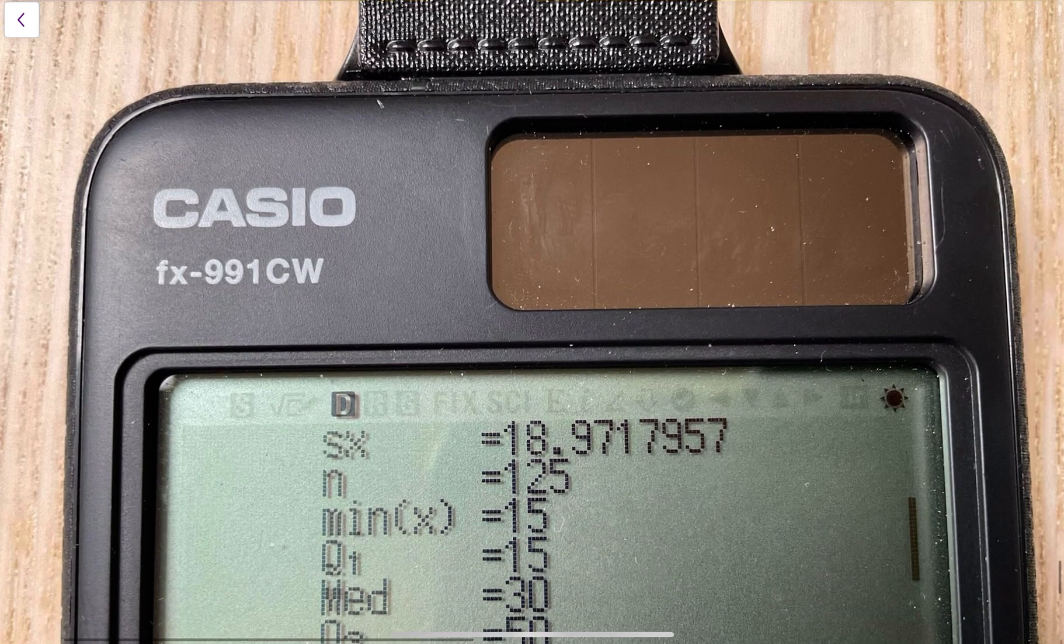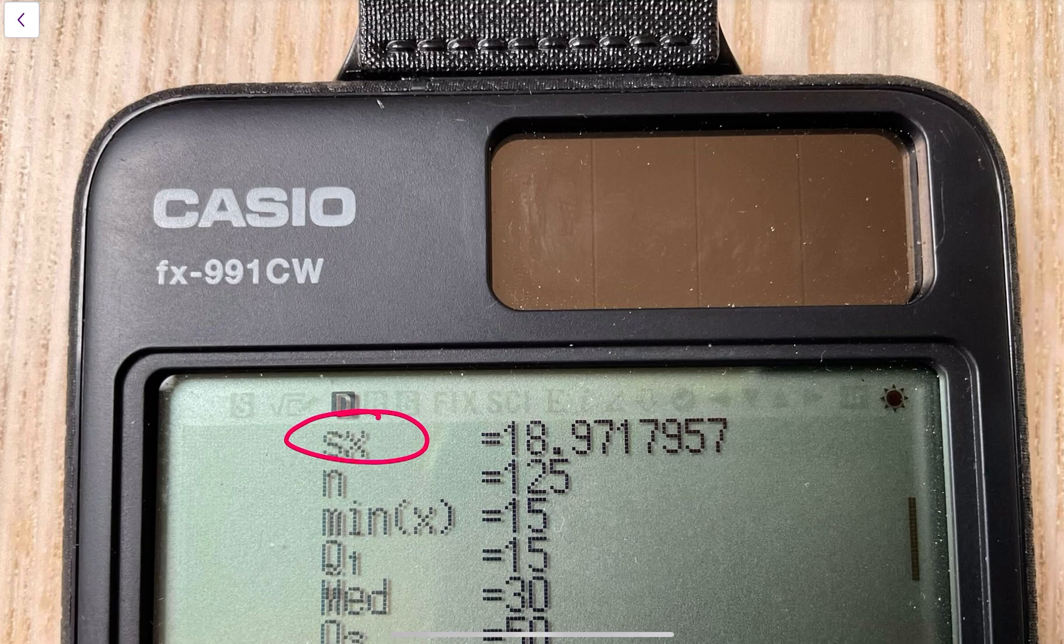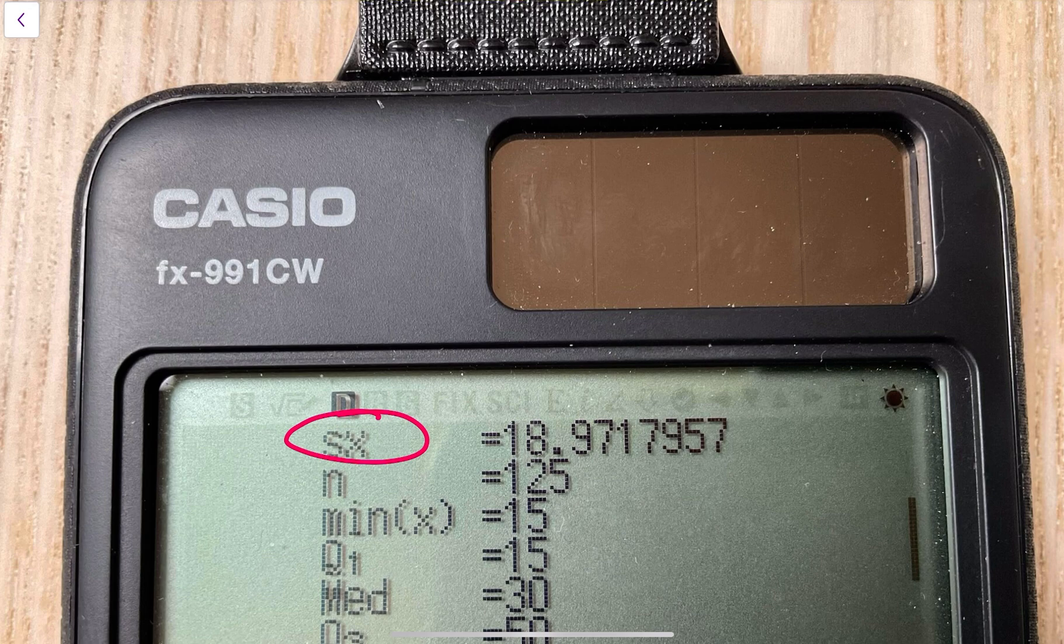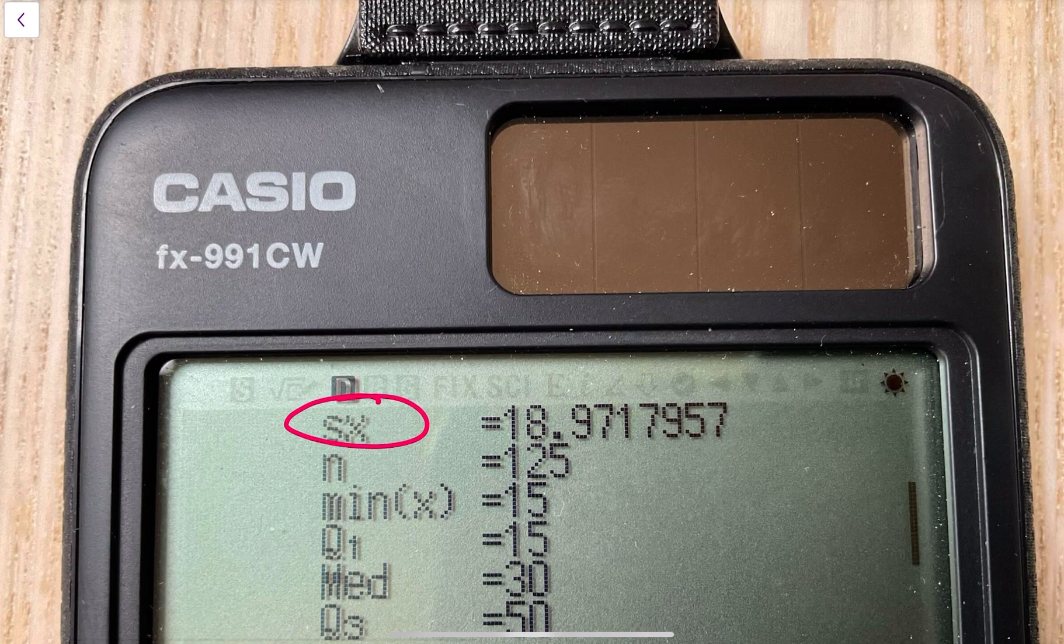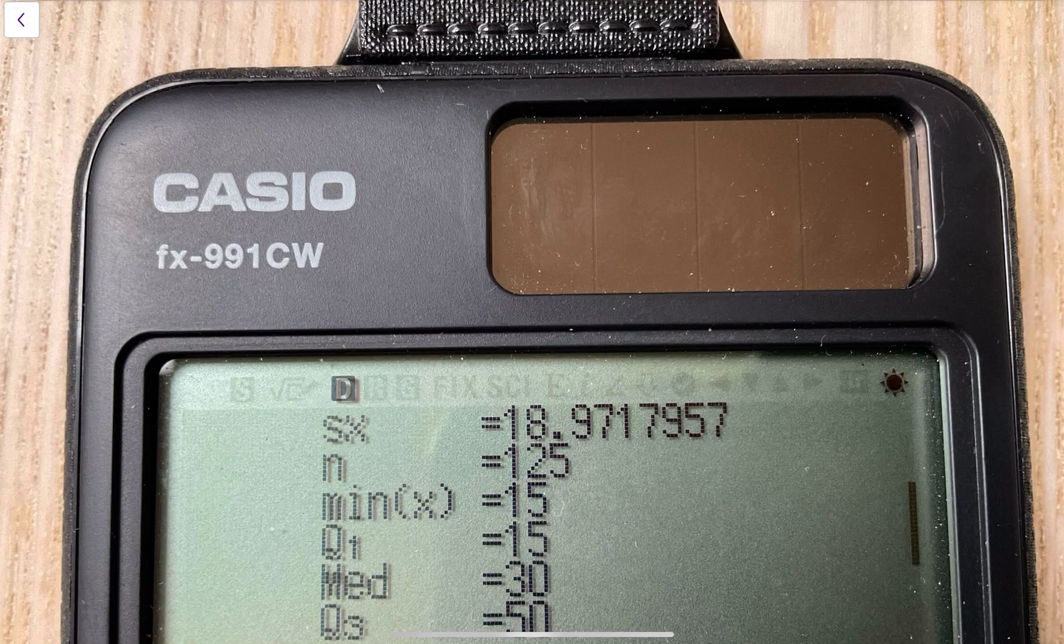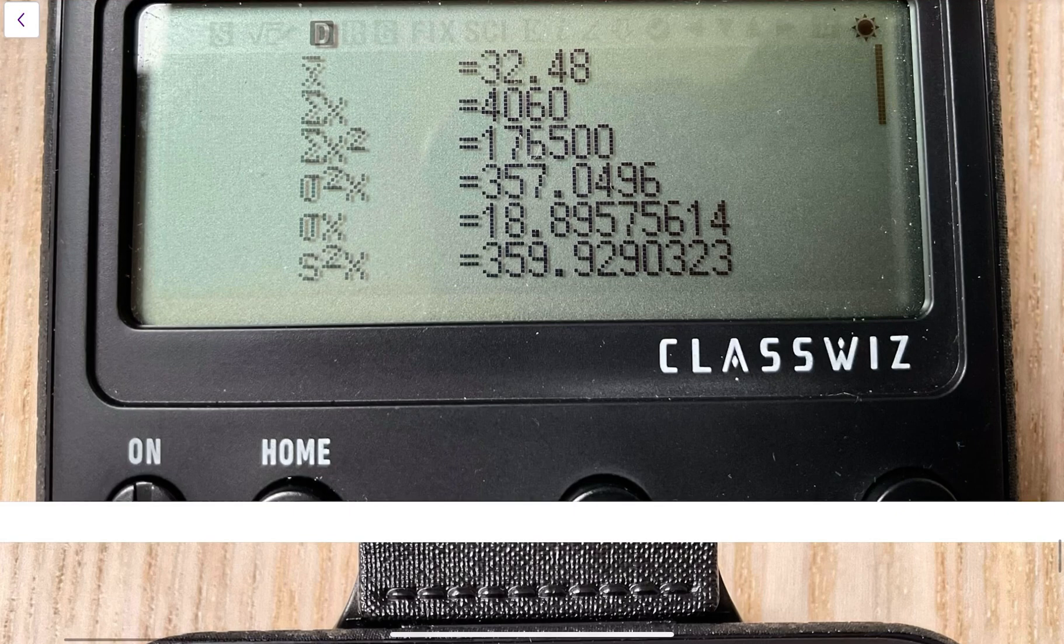This one, sx, is if you've got a sample—so you've only got a small section of your population—and you want to use your sample to estimate the standard deviation of the whole population. And that's where we are in this question: we've got a sample, we want to use our sample to estimate the whole population's standard deviation.